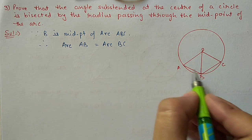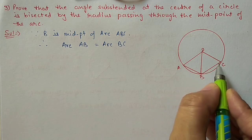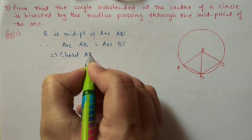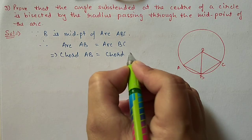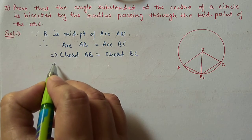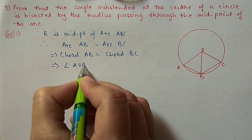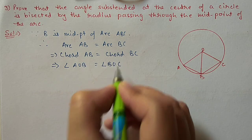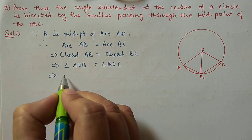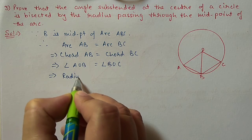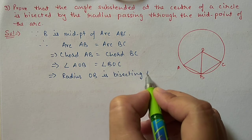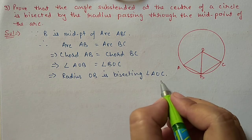These two arcs are equal. If two arcs are equal, then their chords are also equal, so chord AB is equal to chord BC. Because these two chords are equal, they subtend equal angles at the center. So we can write angle AOB is equal to angle BOC. It means OB is bisecting this angle. Therefore, radius OB bisects angle AOC. This is what we had to prove.